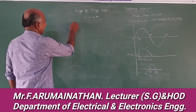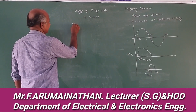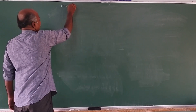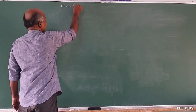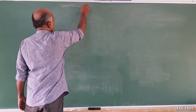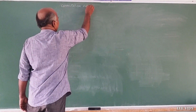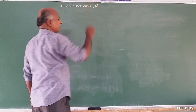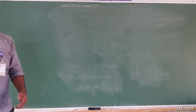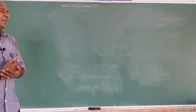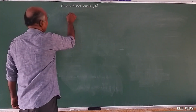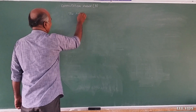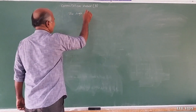Commutation angle — also called beta, or sometimes the extinction angle — is the angle of the off state of an SCR. So the angle at which the SCR turns off, with respect to the AC supply, is called the commutation angle.